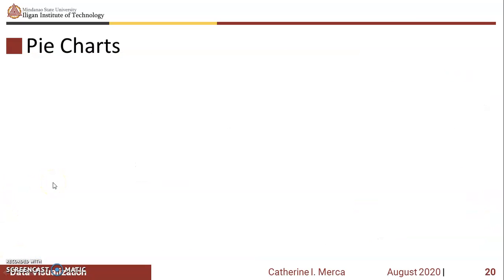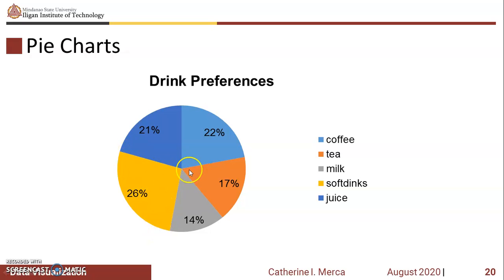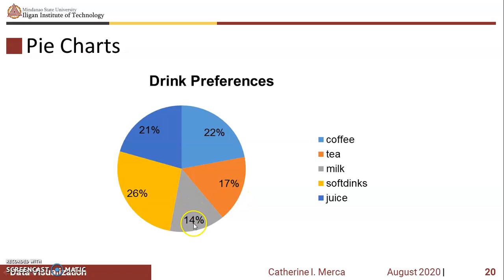Pie charts. This is an example of a pie chart made out of Excel using the drink preference data we had earlier. In a pie chart, it is necessary that you put the numbers on the slices; otherwise, it will not be very clear as to what percentage or numbers are involved. Here, 26% are soft drink drinkers, and the least value is 14% for milk drinkers.